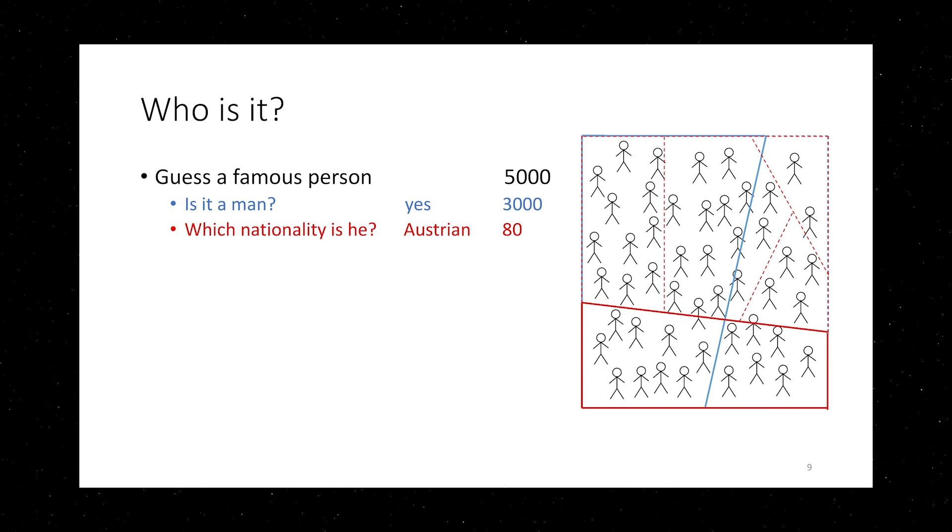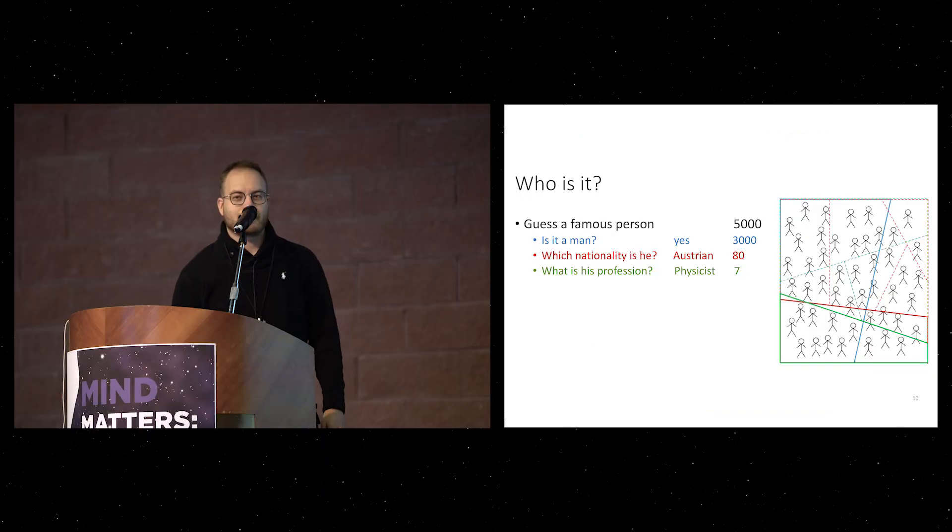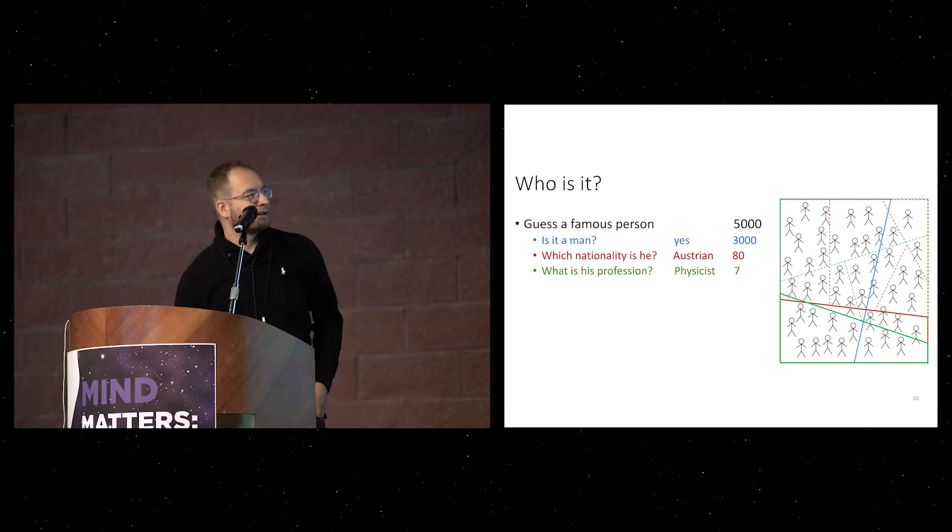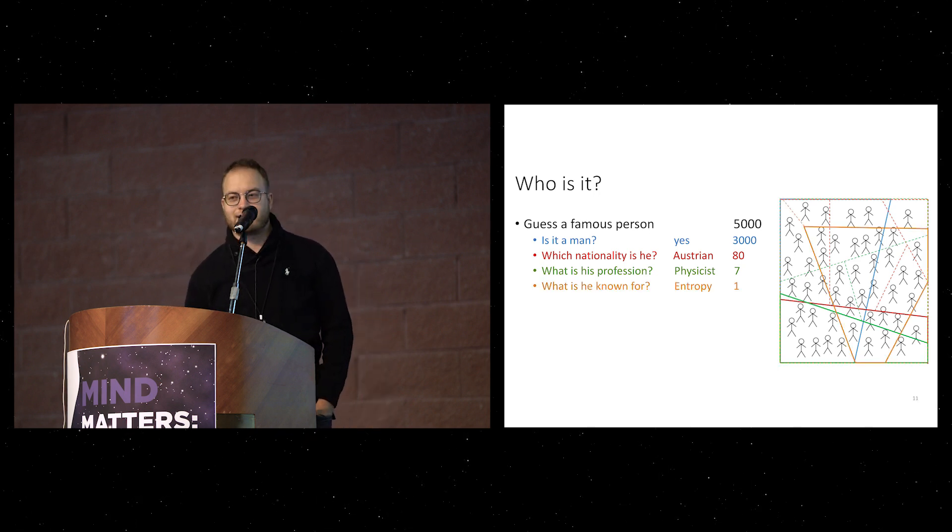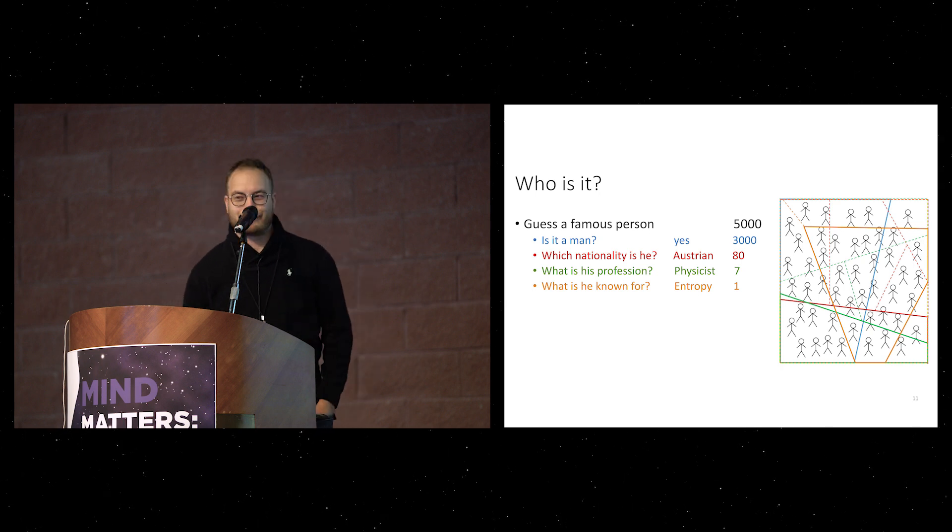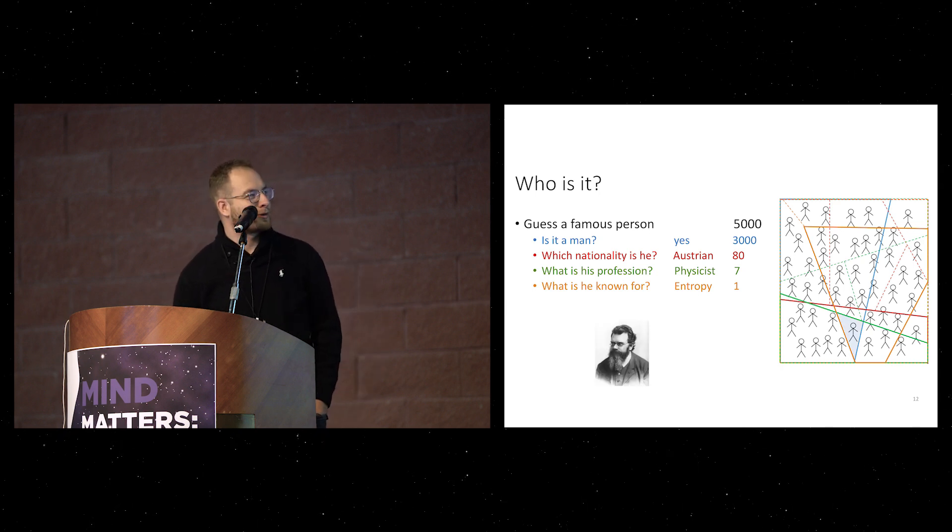Then you may ask, what nation is he? And I say he's Austrian. And now you are down to 80. And since I'm a physicist, maybe you think I will think about a physicist, but you were right. Now you are down to seven. And finally you can ask, what is he known for? It's entropy. Well, as many of you have guessed already, I'm talking about Ludwig Boltzmann.